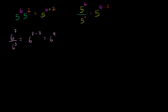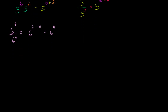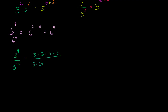Now let's try something interesting — this will be a good segue into the next video. Let's say we have 3 to the 4th power divided by 3 to the 10th power. Well, if we go from basic principles, this would be 3 times 3 times 3 times 3 all over 3 times 3 — and we're going to have 10 of those 3's in the denominator.